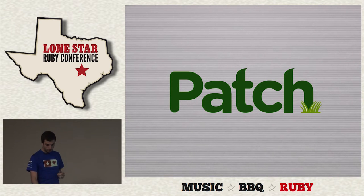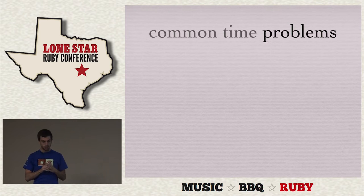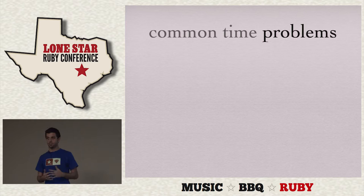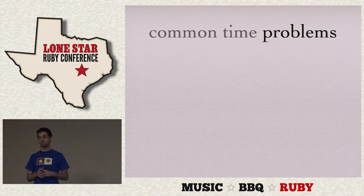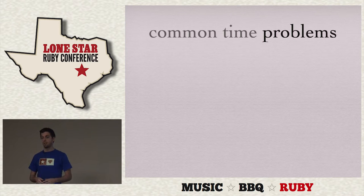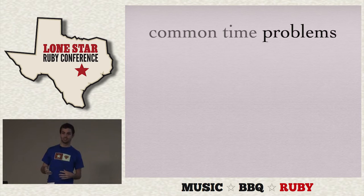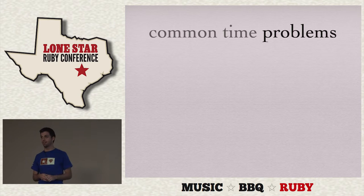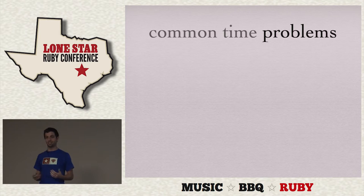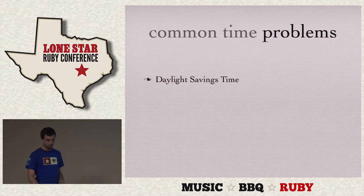So I set out to make a gem that would handle date recurrence, and noticed that there are a lot of problems with dates just in general. In fact, dates are normally a sticking point for any language. Often, when a language comes around, it normally has a built-in time and date library that lasts maybe a year until people decide that it doesn't do what it's supposed to do, or it's too buggy, or the interface isn't right.